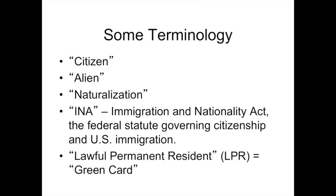And finally, a term we want to understand for this lecture: lawful permanent resident, often abbreviated LPR. You sometimes hear it called legal permanent resident. This is someone who has the right to stay in the United States indefinitely, as well as to come and go and live in the United States. This is the green card — the equivalent of having a green card. It's not actually green; it used to be green, and that's why the name has stuck. But it's a particular kind of visa that gives you lawful permanent residence.